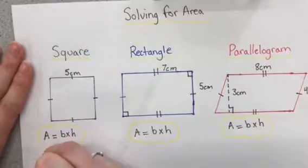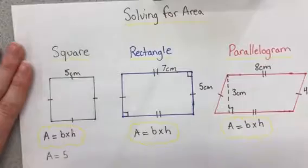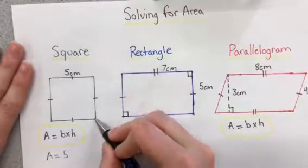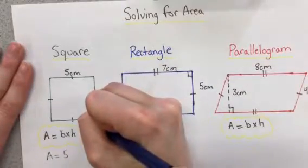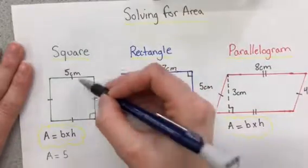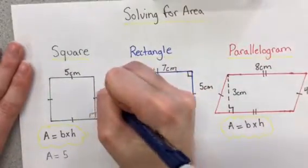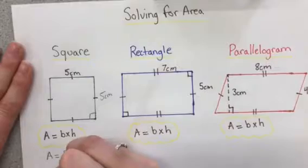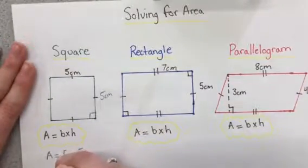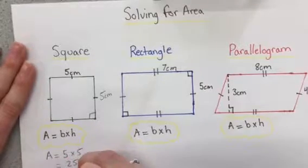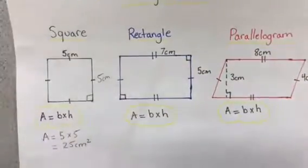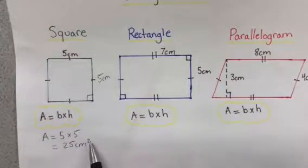If we write out our formula, our base will be 5 centimeters. Our height is always 90 degrees from the base upward. In the case of a square, all side lengths are the same, so it'll be 5 times 5. Our answer is 25 centimeters squared. Make sure you always put your units—centimeters and squared.